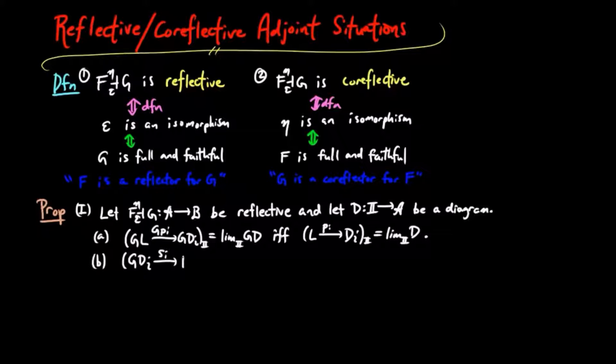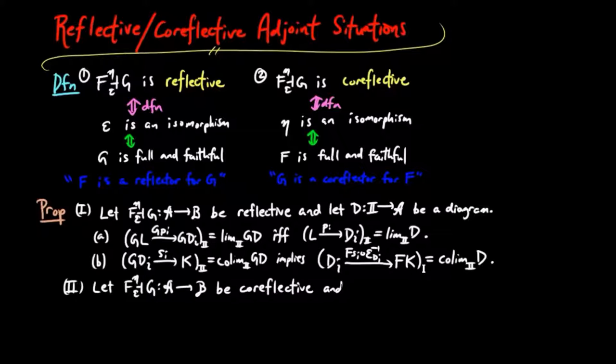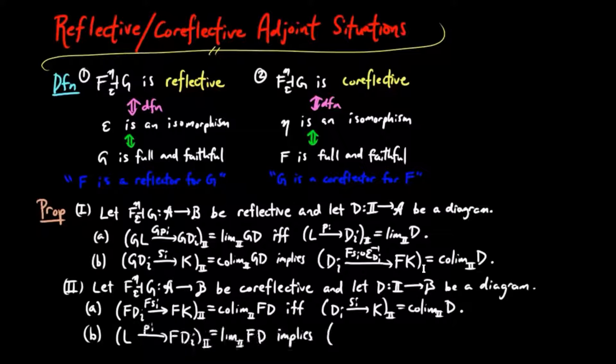And B, the co-cone SI on GD is the co-limit of GD implies the co-cone FSI epsilon inverse DI on D is the co-limit of D. And two is just the dual statements.